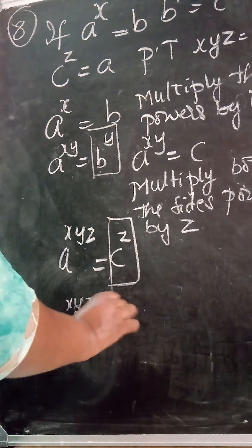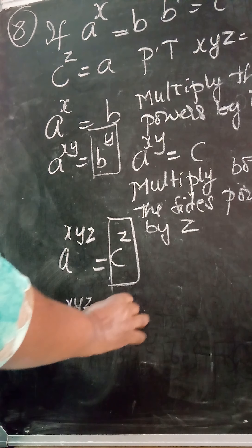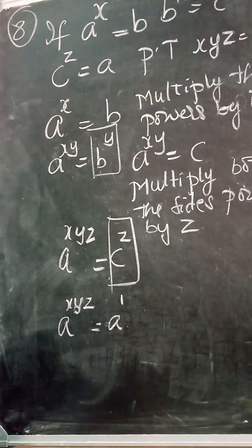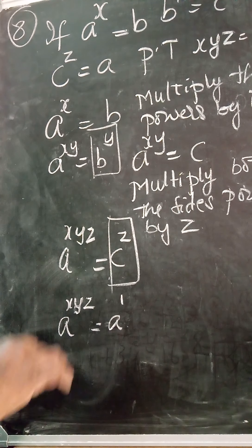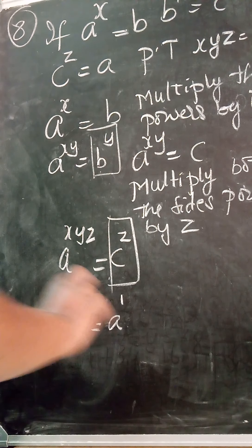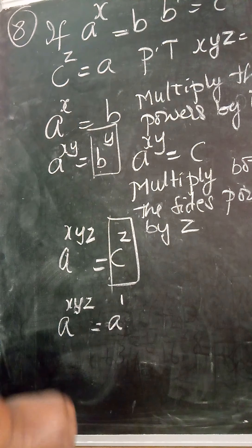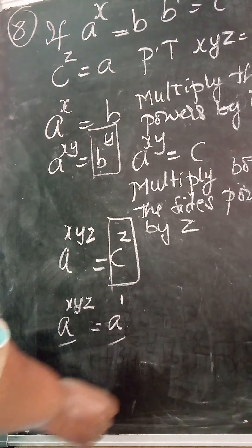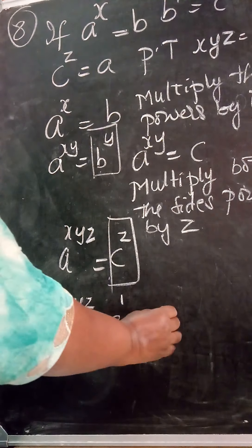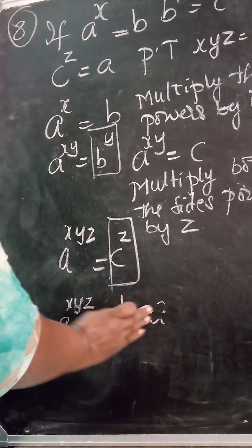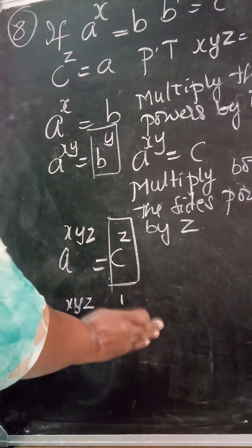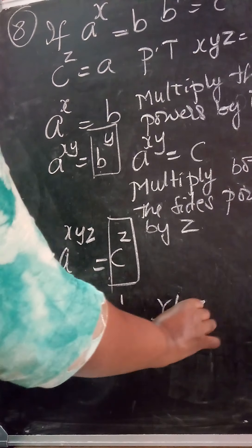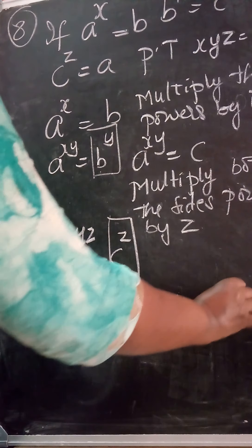Now I will not simply write a; instead I will write a to the power of 1, because if there is no power, it is understood as a raised to the power of 1. Since the bases are the same, we can equate the powers, so xyz is equal to 1.